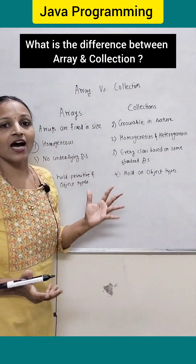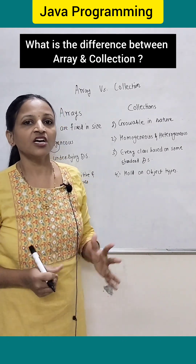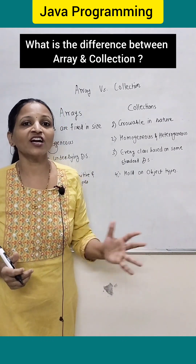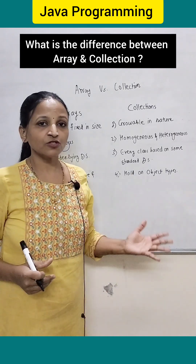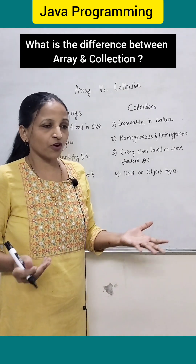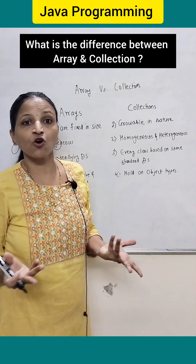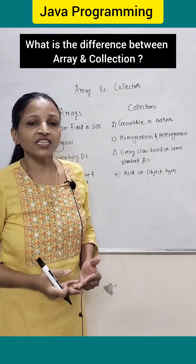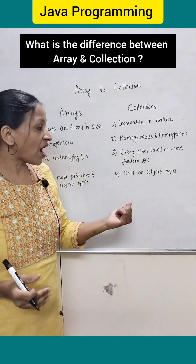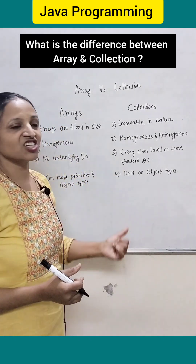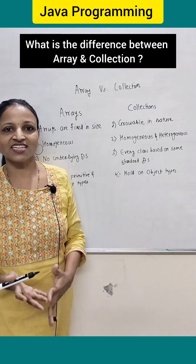Arrays do not have any underlying data structure, meaning they have no ready-made method support. For example, if you want to sort an array, there is no ready-made method for doing that. But all collection classes are based on some underlying data structure, which is why they provide ready-made methods that you can use directly.